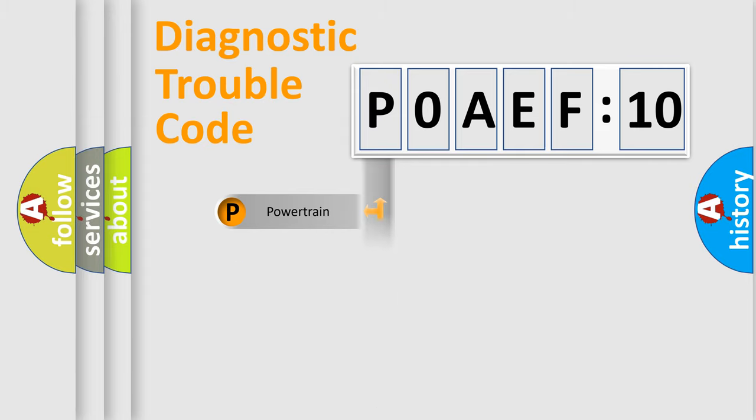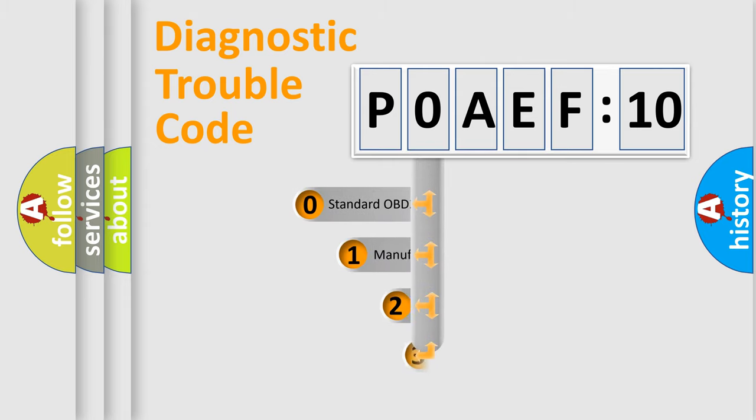Powertrain, Body, Chassis, Network. This distribution is defined in the first character code.